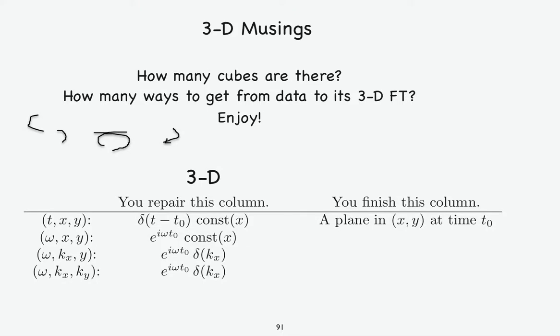For final thoughts here on this topic, these are just musings. How many cubes are there in 3D? How many cubes could we consider for display? And another question we could answer is, how many different ways are there to get from the data to the 3D Fourier transform?